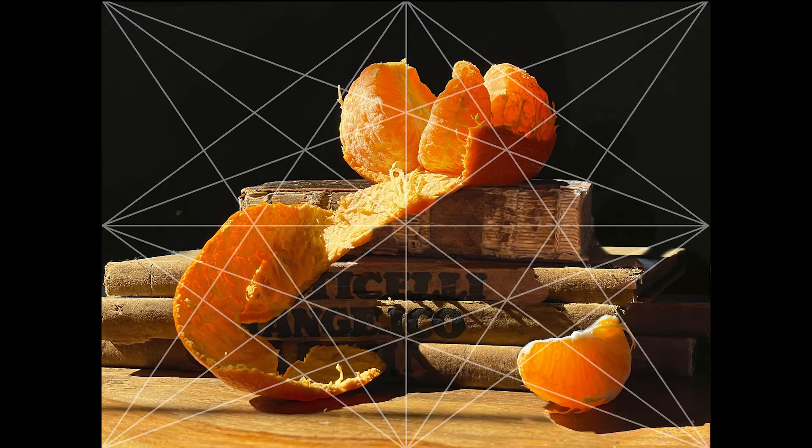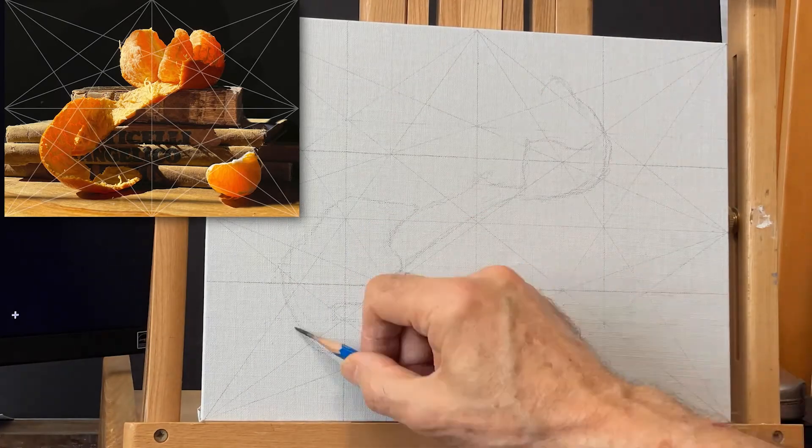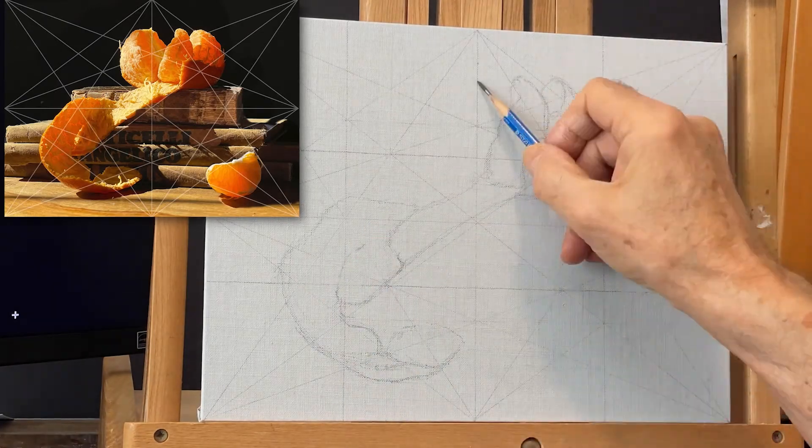I use a harmonic armature for two purposes. The first is to check my compositions and the second is as a drawing guide to transfer my compositions onto canvas.